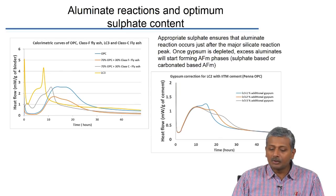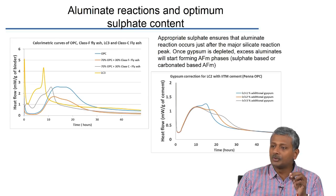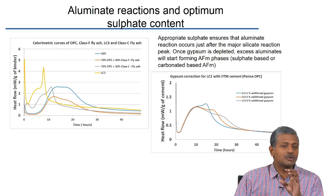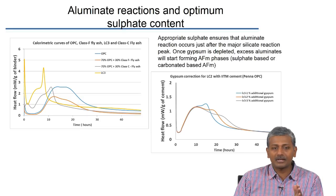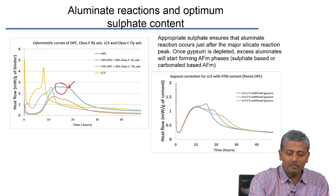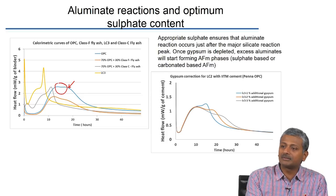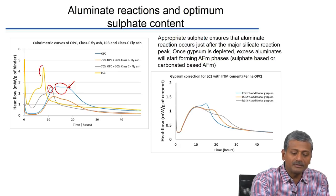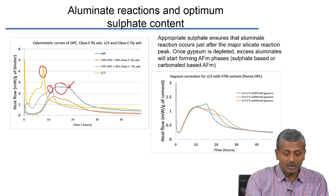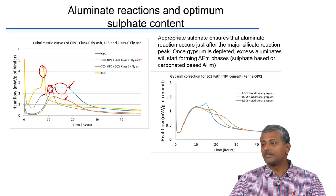Regarding heat evolution and aluminate reactions: appropriate sulphate content is needed so that the aluminate reaction occurs just after the silicate reaction, producing good early strength. Different systems — OPC, type F fly ash, type C fly ash — show different heat patterns. In OPC, there is a very broad peak where aluminate reactions may overlap with silicate reactions. With reactive aluminates like those from calcined clay, a distinct secondary aluminate peak appears.